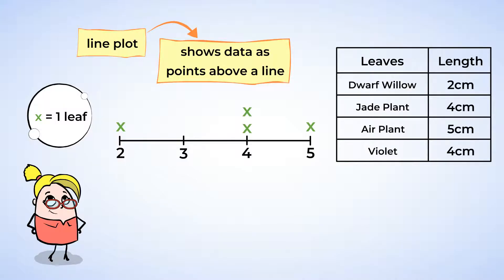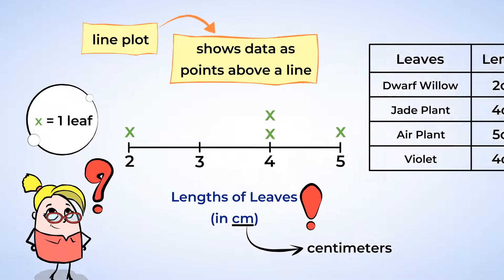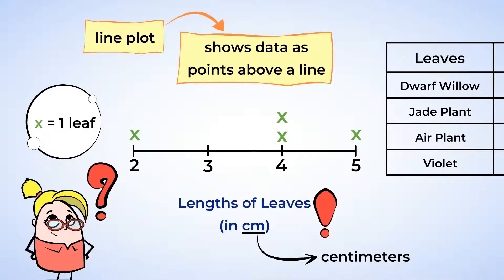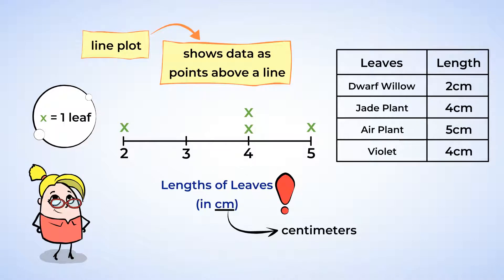Finally, your line plot needs a label. You can write this above or below the line plot. Let's call it lengths of leaves in centimeters. It's important to make sure you write what unit you are using, otherwise you won't be able to tell just from looking at the line plot. The abbreviation, or short version of the word centimeter, is CM. Amazing! You made your first line plot! What observations can we make by looking at this line plot? We can easily see the length that had the most number of leaves. We can also easily see that no leaves were three centimeters long. When you create even bigger line plots, you'll be able to tell even more from the data. In fact, let's try one now!